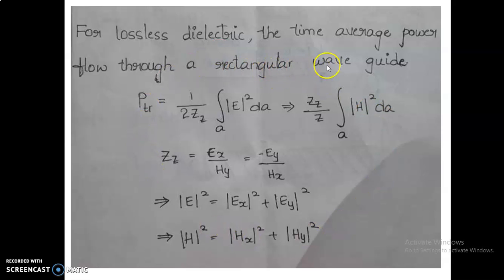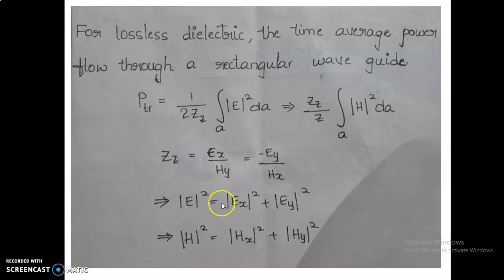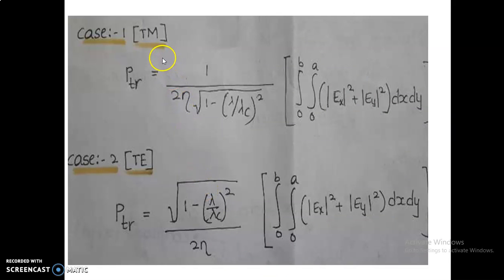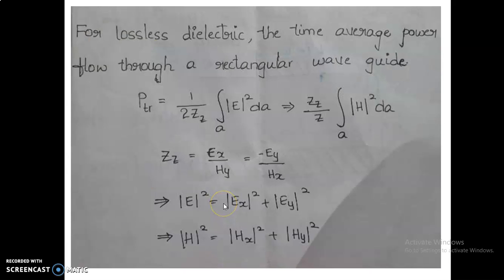For a lossless dielectric, we focus on power transmitted in the rectangular waveguide. This is similar to power being V-squared over R or I-squared over R. The impedance Z is given as Ex over Hy minus Uy, and the electric field squared can be written accordingly. For TM mode and TE mode, the impedance is 377 ohms. Remember these formulas for finding power transmission in TM and TE modes.